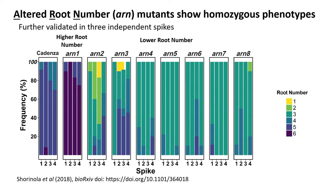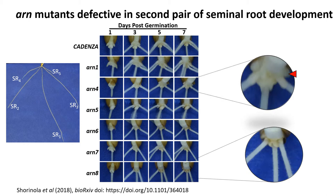We selected those lines and took three additional spikes from three different plants and phenotyped those, mainly to see if the phenotypes are consistent and recoverable. In the heat map, Cadenza mostly shows five seminal roots. We identified a mutant line with an altered number of roots, which we call un-1 — it mostly has six seminal roots compared to Cadenza. Other mutants we identified have lower numbers of seminal roots: un-2, un-8. They have varying degrees of penetrance, but most show stable phenotypes across different spikes.